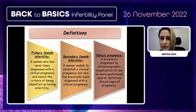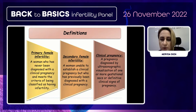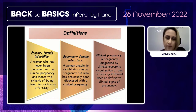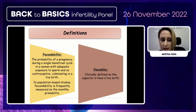Primary female infertility means a woman who has never been diagnosed with a clinical pregnancy and meets the criteria of being classified as having infertility. Secondary female infertility means a woman unable to establish a clinical pregnancy, but who has previously been diagnosed with one. Clinical pregnancy means a pregnancy diagnosed by ultrasonographic visualization of one or more gestational sacs or definitive clinical signs of pregnancy. Fecundability is the probability of a pregnancy during a single menstrual cycle, measured as the monthly probability.